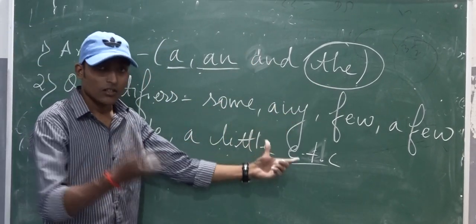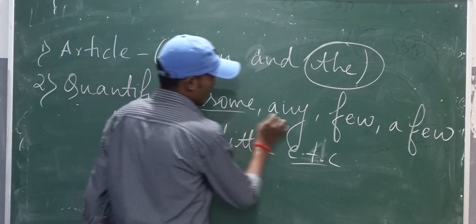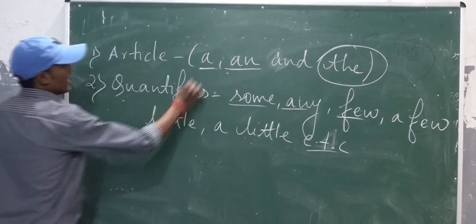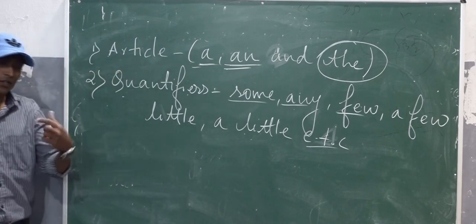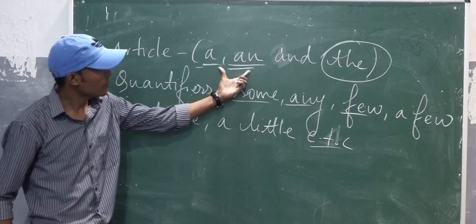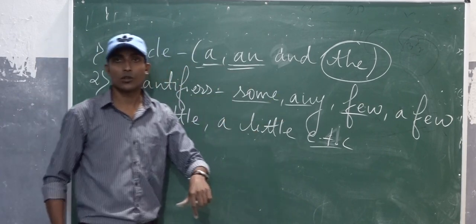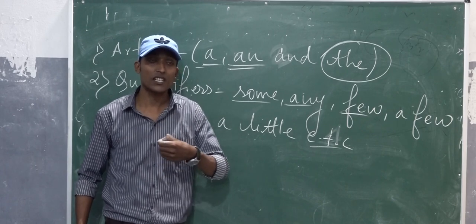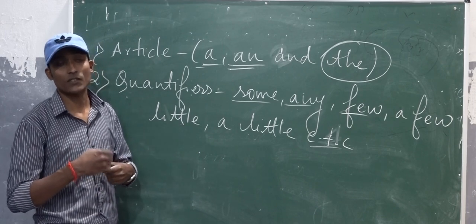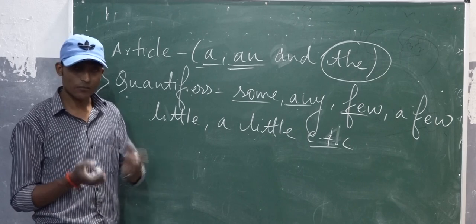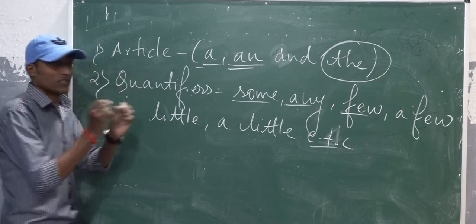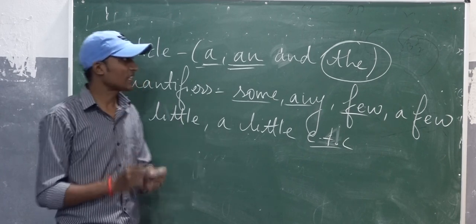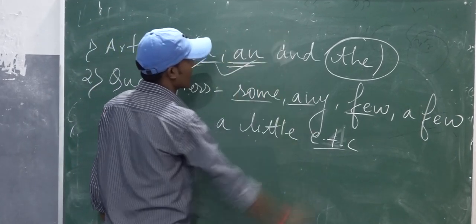Tomorrow I will give you some exercises related to some, any, few, a few, little, and a little. Previously I told you: we use 'a' before consonant words and 'an' before vowel words. But sometimes consonant words, when pronounced, produce a vowel sound, and sometimes vowel words represent a consonant sound. In such cases, you have to focus on the pronunciation to understand where to use a and where to use an.